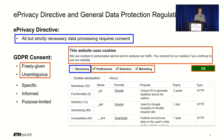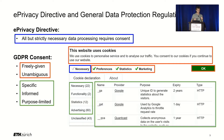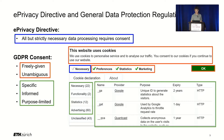Consent needs to be freely given and unambiguous, meaning users should not be forced to give consent, and a website cannot implicitly assume that browsing equals consent to data collection. Moreover, consent needs to be specific and informed — consent notices must state the reasons for data collection and separate it into clearly defined purposes, like the categories shown in this example.